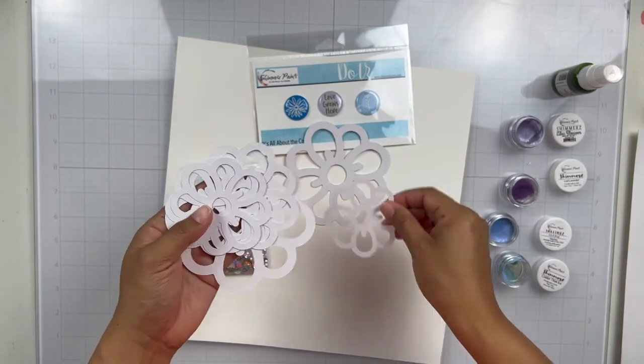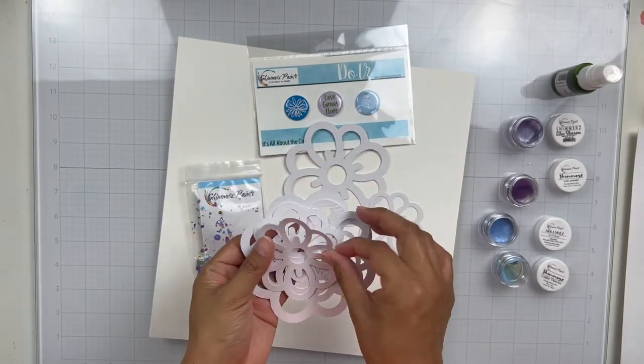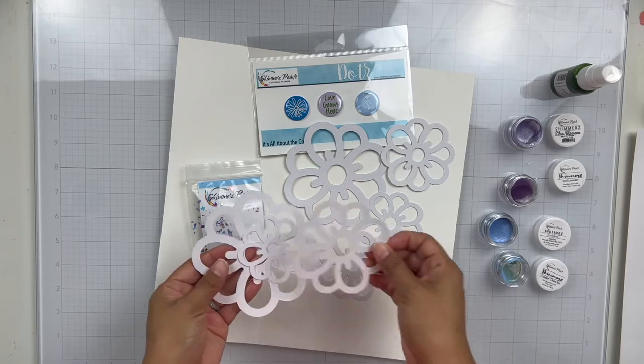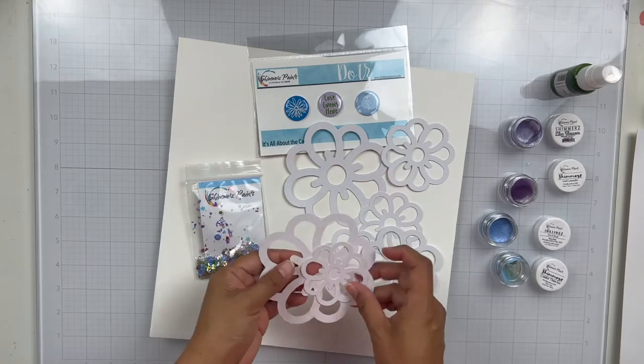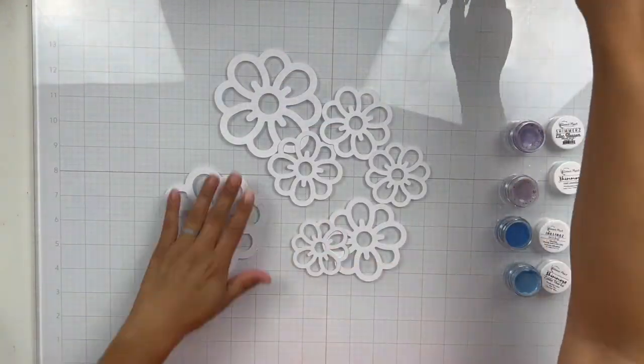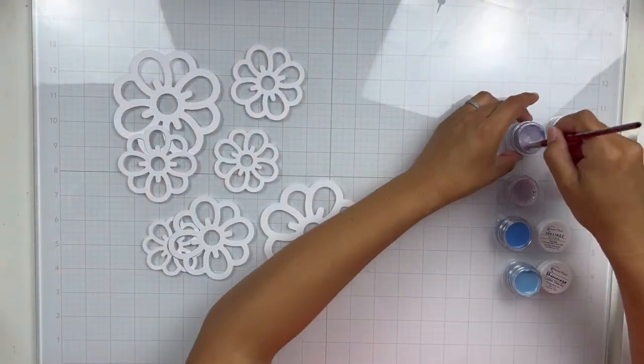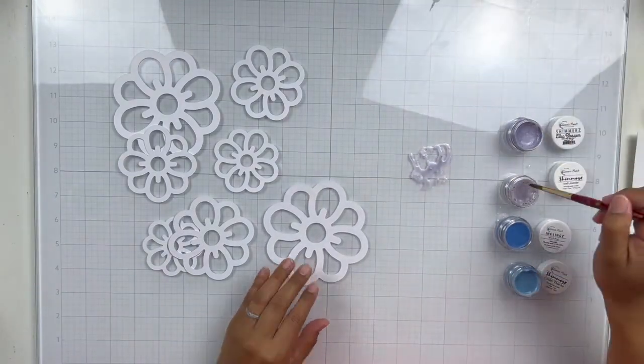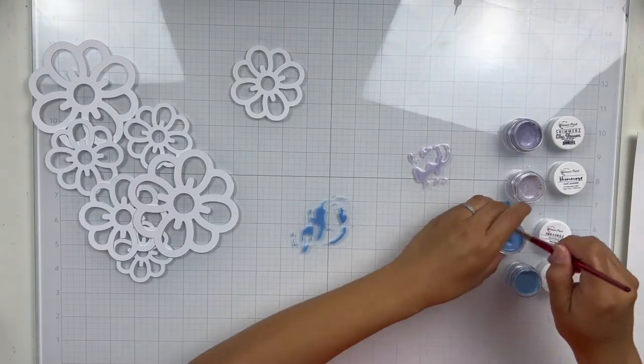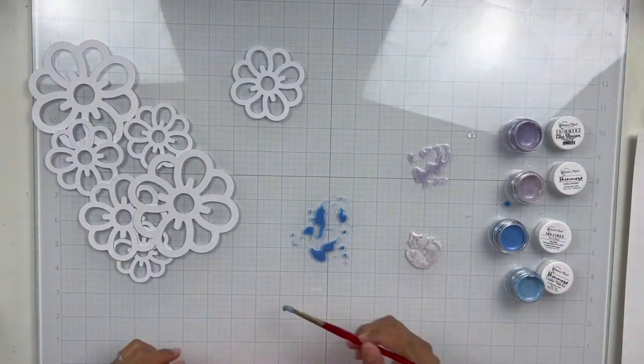Now, what I did is I actually, I believe I duplicated the whole thing maybe once. I can't remember how many flowers come in the original cut file, but I duplicated a few of them so that I could change the sizes. I knew immediately that I wanted to turn one of these flowers into a shaker. So that's why I made it larger. But then I also made some smaller so that I could create some interest on my page.